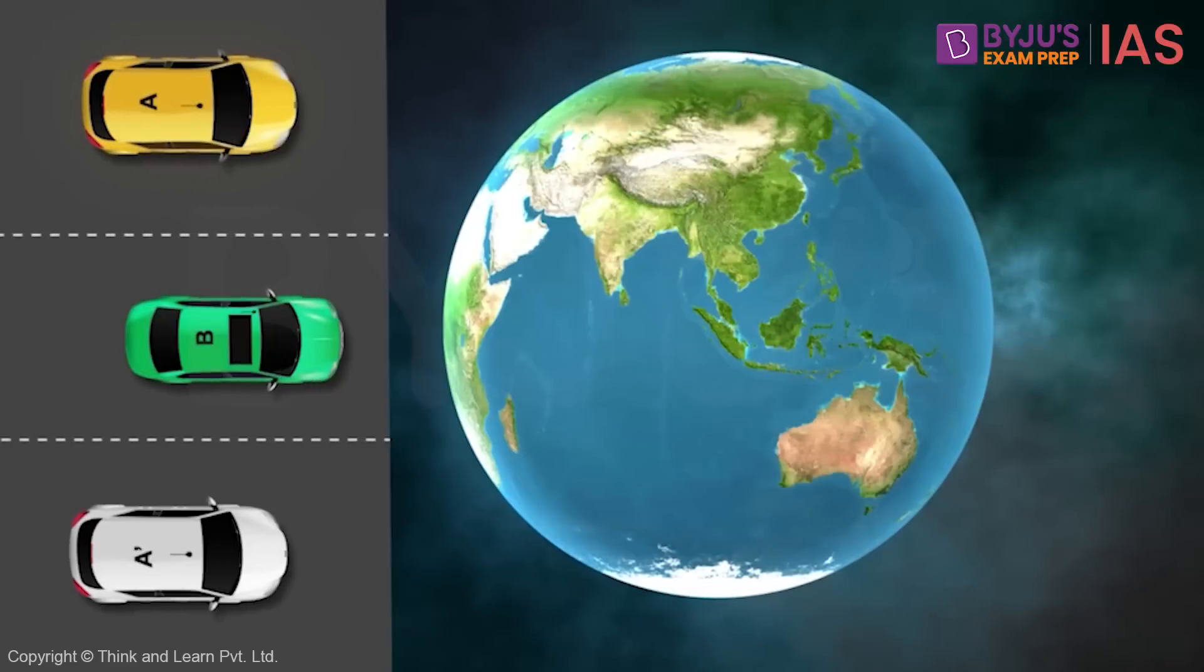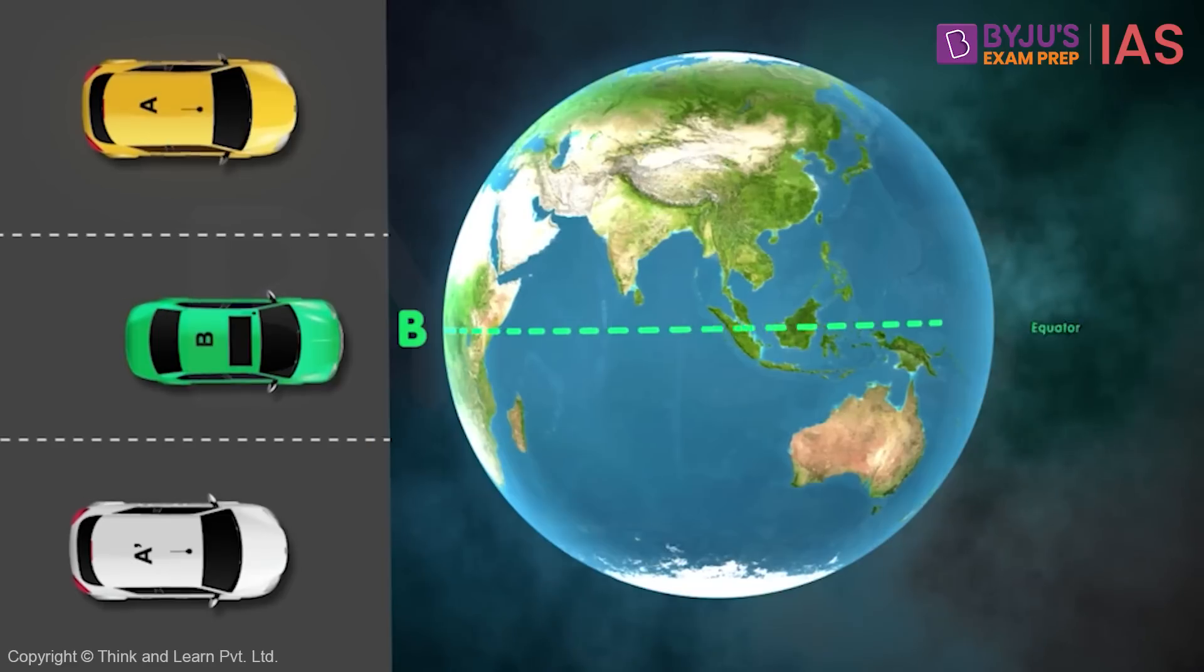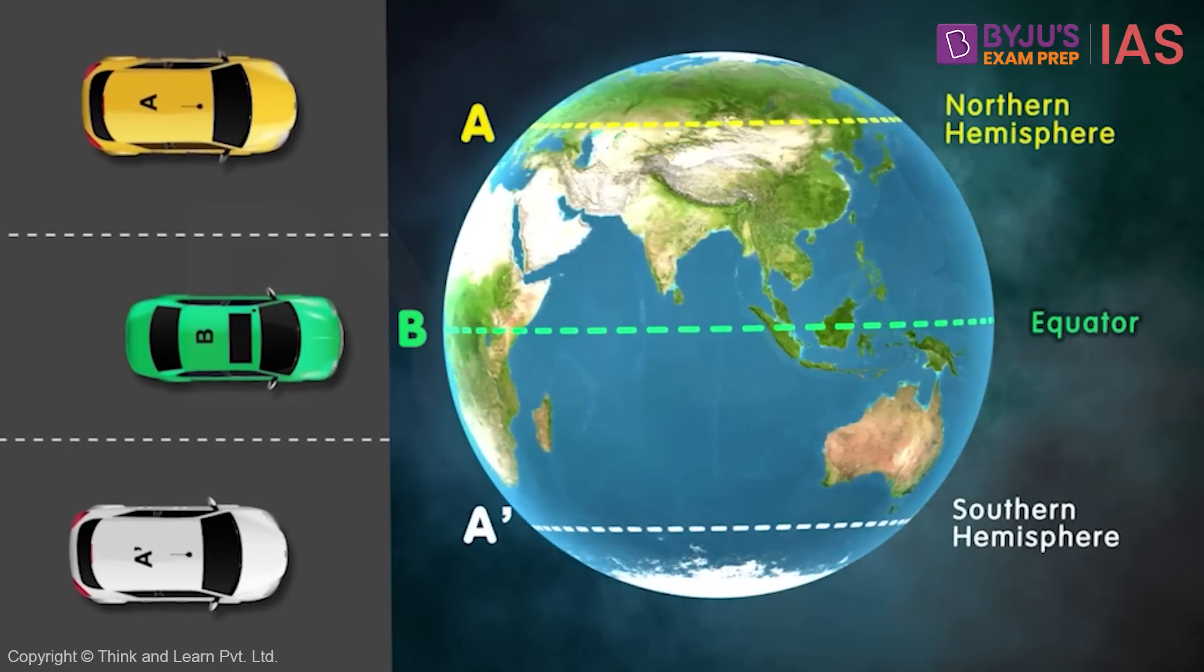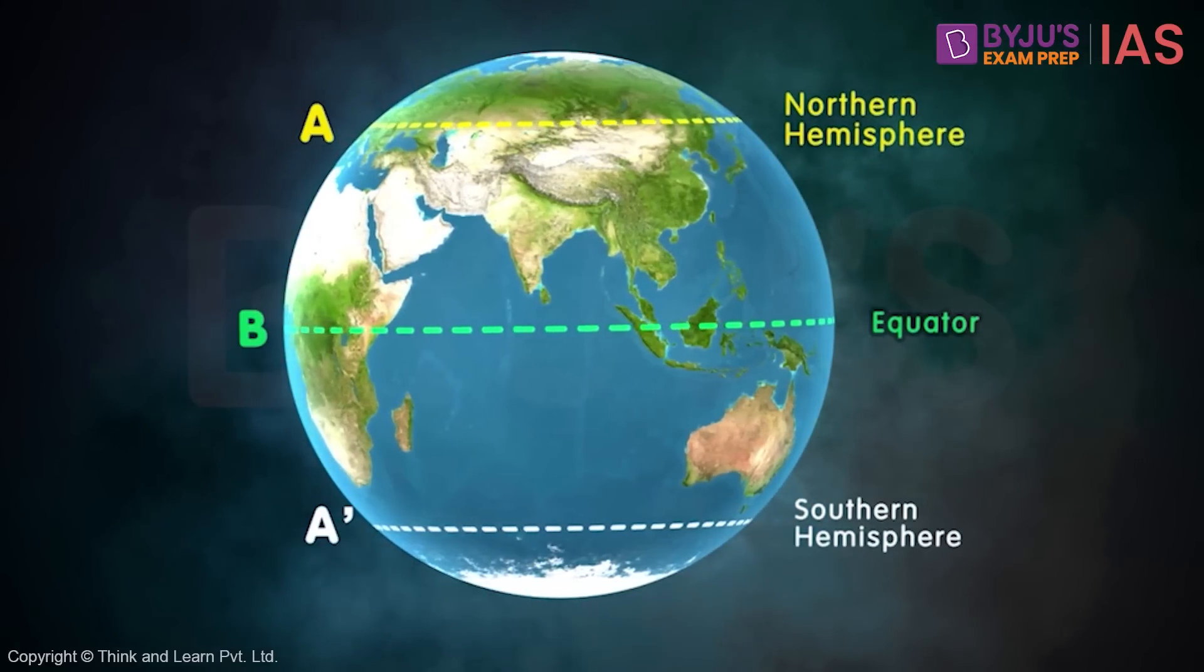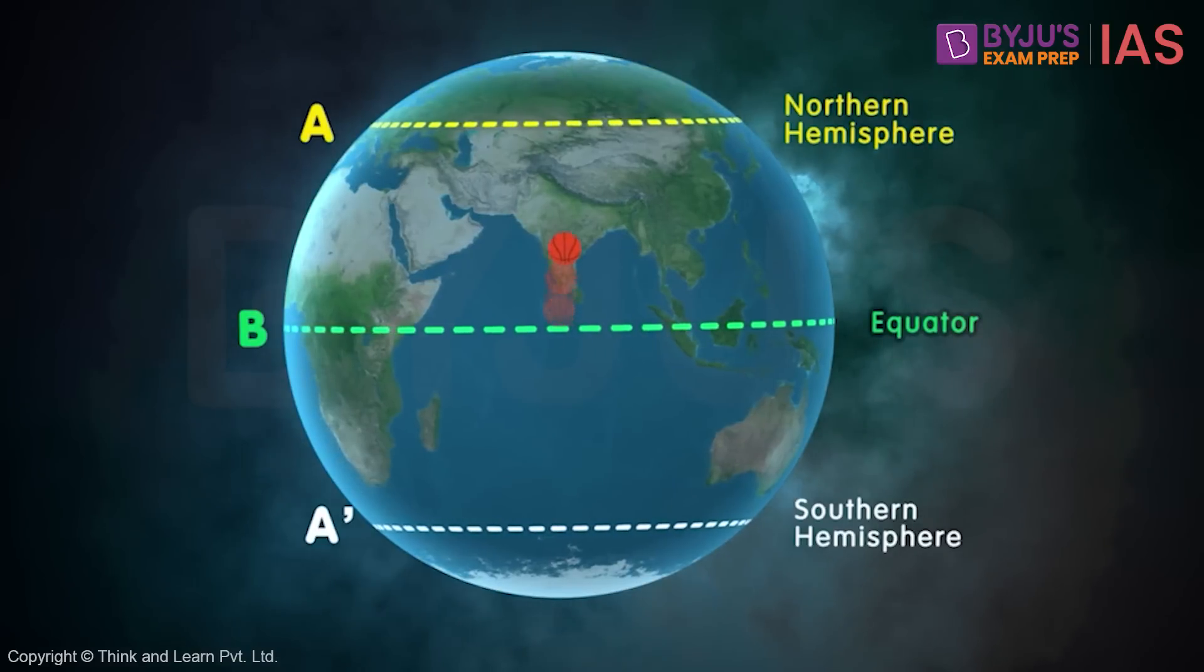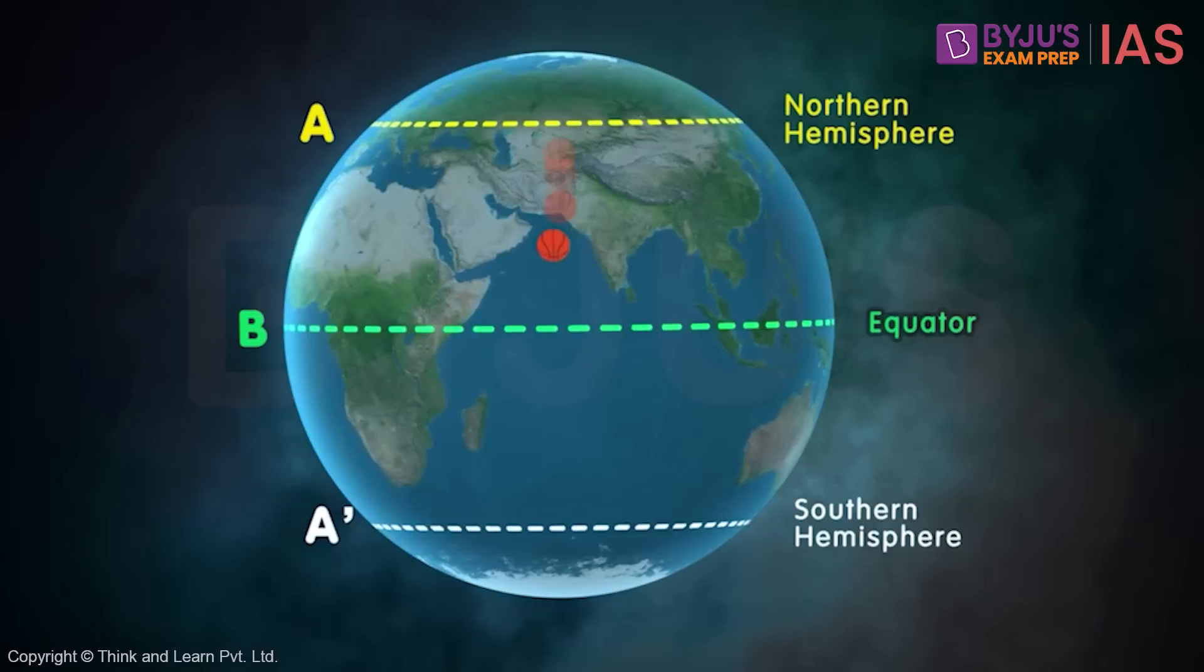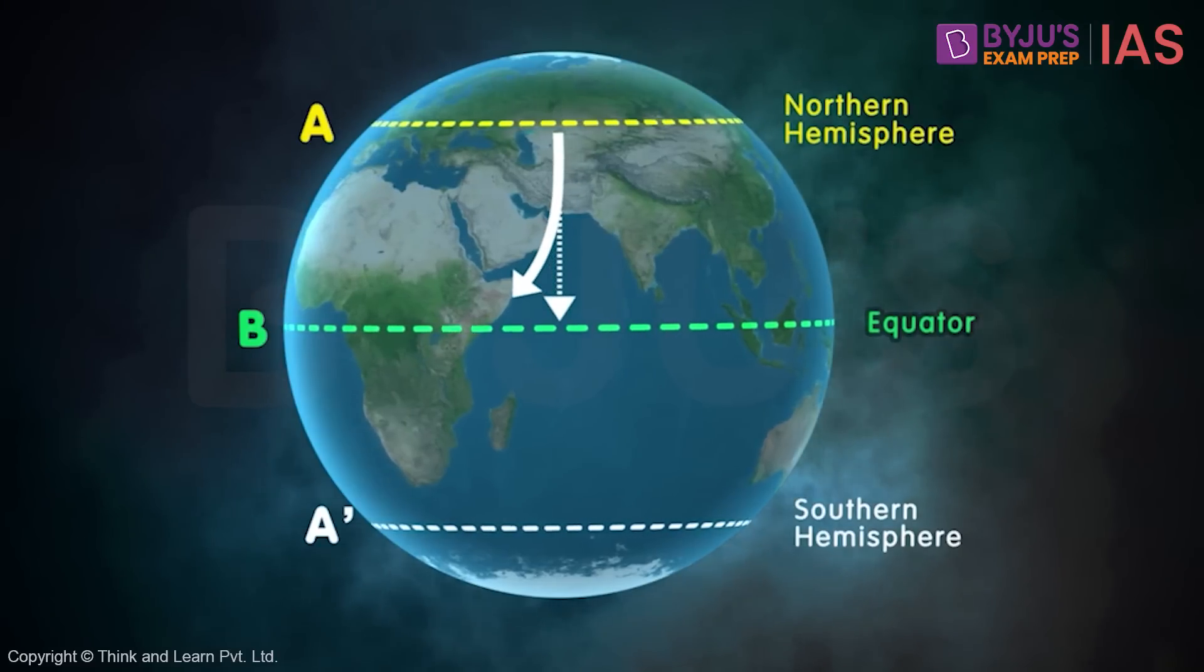Now, something similar happens with Earth as well. Car B can be imagined as a point situated on the equator and car A and A dash can be imagined as the points in the northern and the southern hemispheres respectively. The point on equator is travelling faster than a point in the northern and the southern hemisphere. Thus, if a ball is thrown in a straight line from equator to the northern hemisphere, it will appear to take a curved path towards right. And if it is thrown from a point in the northern hemisphere towards equator, still it will appear to have taken a curved path towards its right.